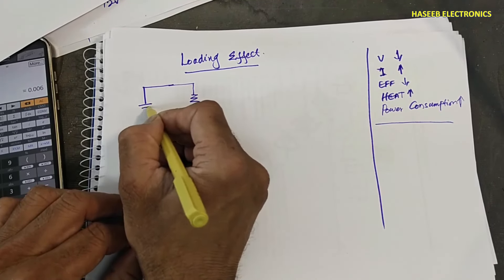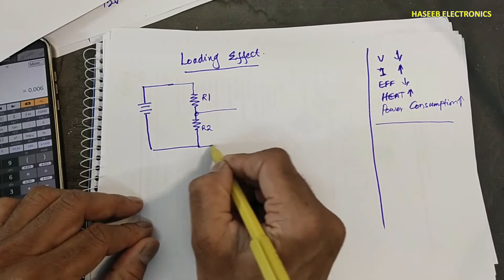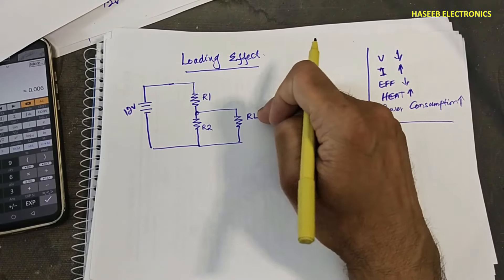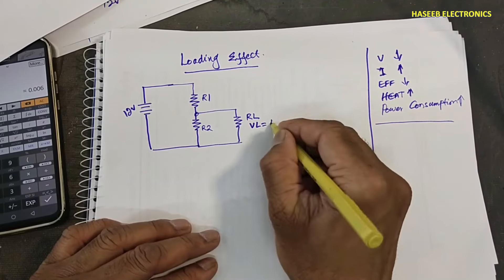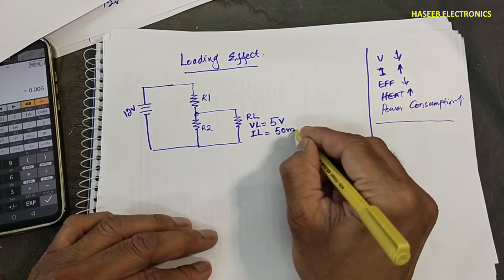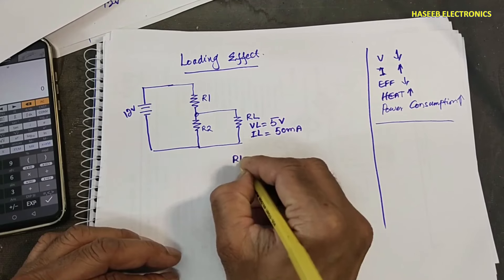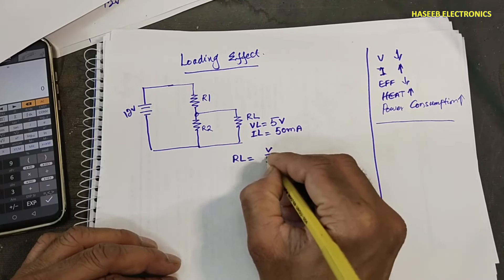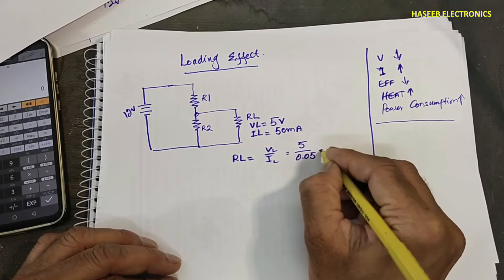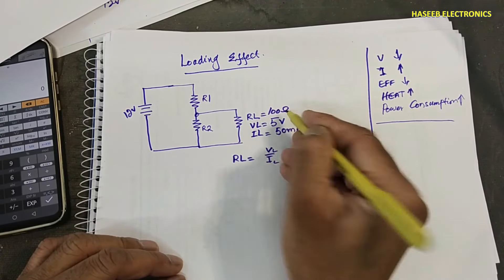Here is R2 and R1, with RL in parallel to R2 and a 12-volt supply. First, we need to analyze the load voltage V_L — in my example, 5 volts — and load current I_L — for example, 50 milliampere. With these two values, RL equals V over I — 5 divided by 0.05 — so RL equals 100 ohms.